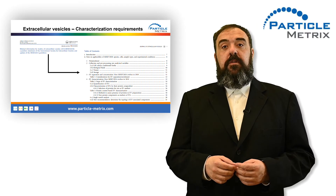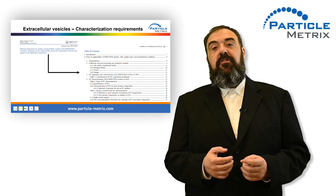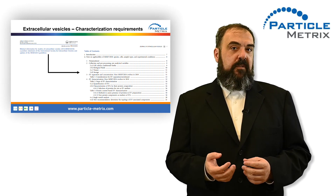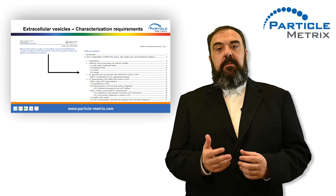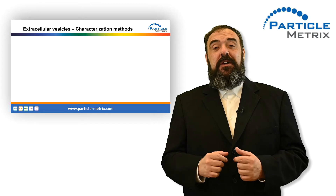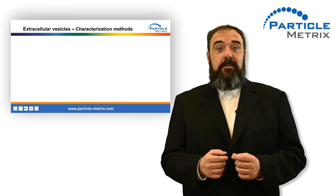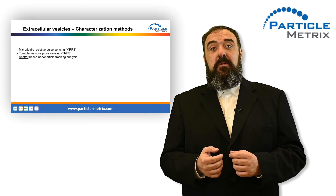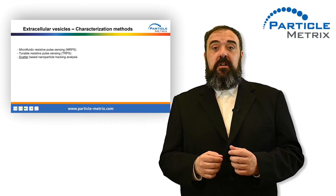As early as 2014, the ISEV community published guidelines on the minimum information required for the characterization of extracellular vesicles. These guidelines have been recently updated. The authors describe requirements and experimental controls which must be conducted for a proper EV analysis. Part of the work that needs to be done is a comprehensive quantification analysis of the particles in the sample, a characterization of the protein composition and the existence of surface markers typical for the investigated vesicle type. Current state-of-the-art technologies for sizing and concentration measurements are microfluidic resistive pulse sensing, tunable resistive pulse sensing, and scatter-based nanoparticle tracking analysis.